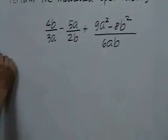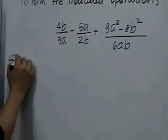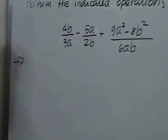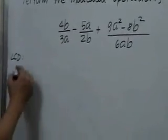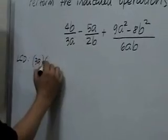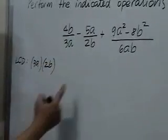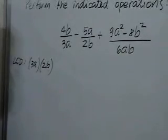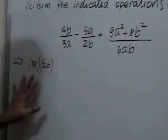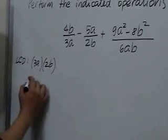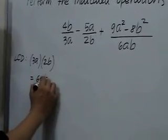We will have to look for the least common denominator, which is the least common multiple of the three denominators involved. For 3a, we have 3a, and for 2b, we have 2b. For 6ab, we actually have 2 times 3 times a times b, which are already here. Therefore, the least common denominator is 6ab.